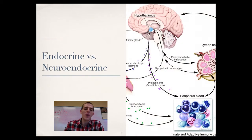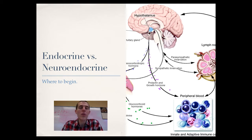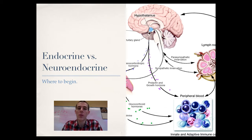First up, let's talk about endocrine versus neuroendocrine signaling, and it's all about where you begin. In a simple endocrine signal, there are just hormones that are secreted into the bloodstream. Those hormones take off, find their target cell, and cause an action within that cell.